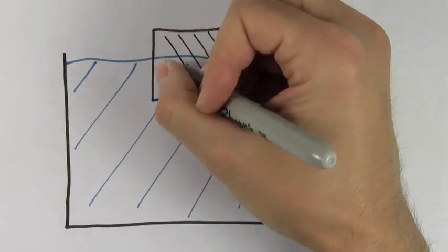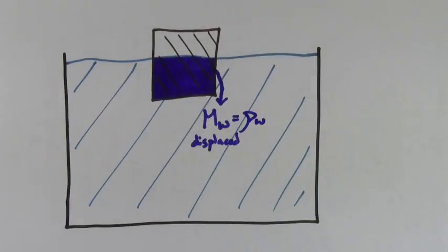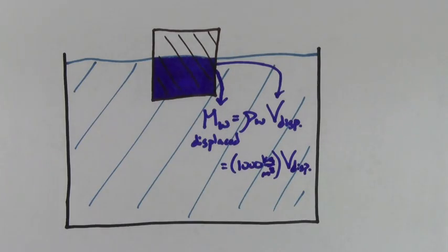If you let a wooden block float in water, you could solve for the mass of the water that it displaces. Just multiply the density of water by the volume of the water that's displaced. The volume of the water displaced will be equal to the volume of the portion of the wooden block that's underneath the water. The density of water is 1,000 kilograms per meter cubed.